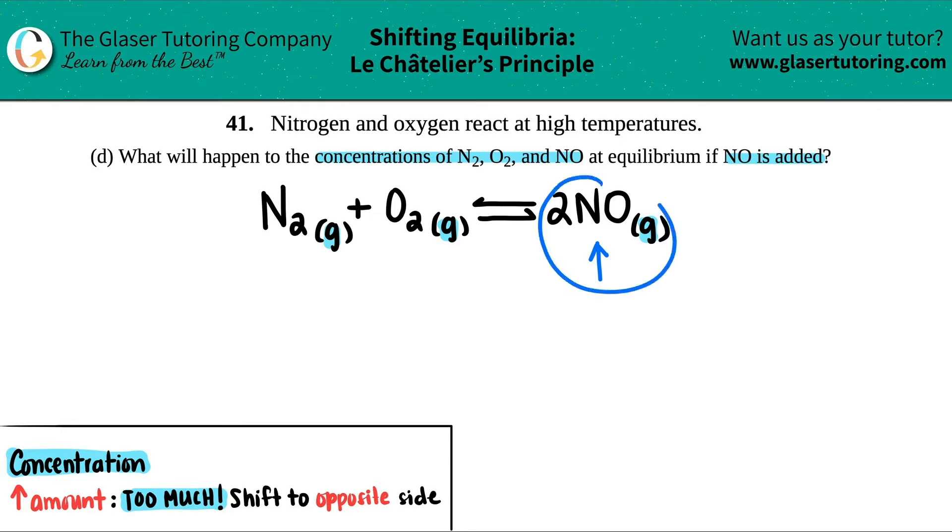So if you have too much of this, you don't want to go and make more, you need to bring it back down to have equilibrium happen. So you're going to shift to the other side.